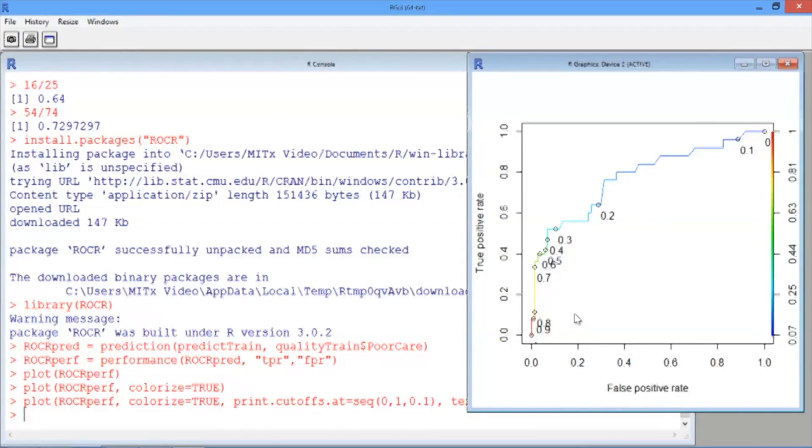Using this curve, we can determine which threshold value we want to use depending on our preferences as a decision maker. In the next video, we'll discuss how to assess the strength of our model.